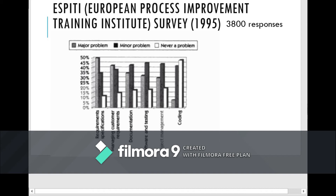The ASPT survey done in 1995 had 3,800 responses. It categorized issues as major problem, minor problem, and never problem. In the major problem category, the top issues were requirement specification, management of requirements, and documentation. These are the main problems identified in software projects.